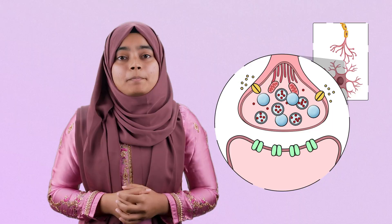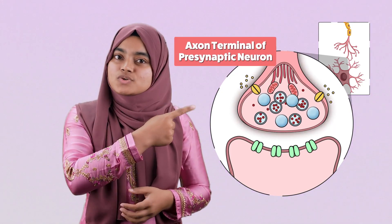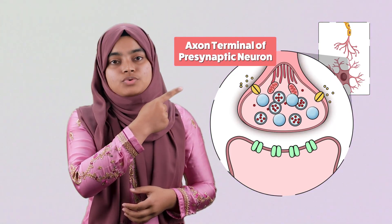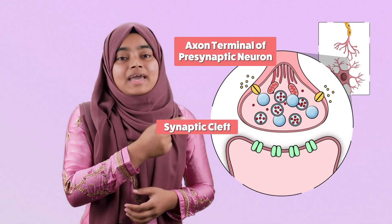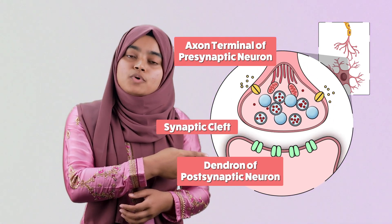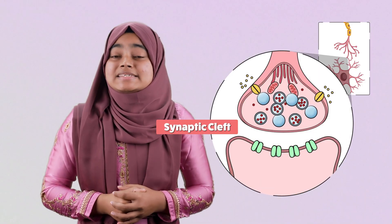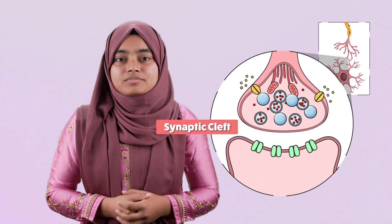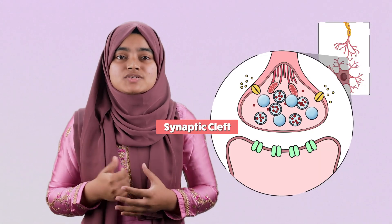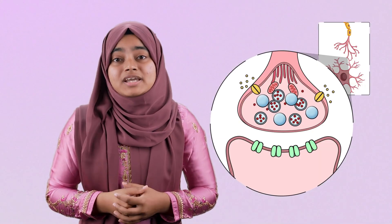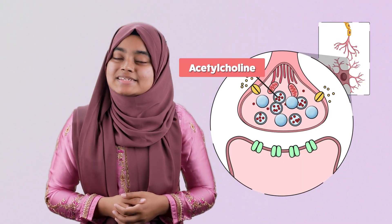Now let's zoom into a part of the synapse. This is the axon terminal of the pre-synaptic neuron, this is the synaptic cleft, and this is the dendron of the post-synaptic neuron. As you can see, the synaptic cleft is nothing but a gap, so action potential cannot directly pass through it. Rather, it will take the help of a chemical substance — acetylcholine.